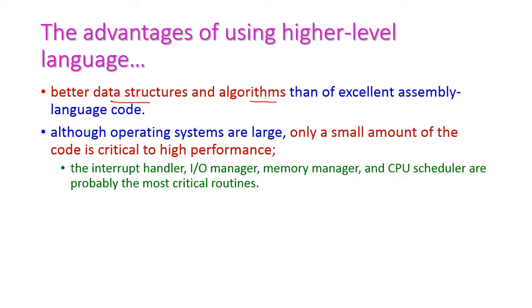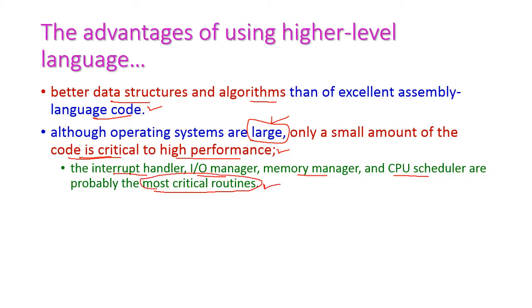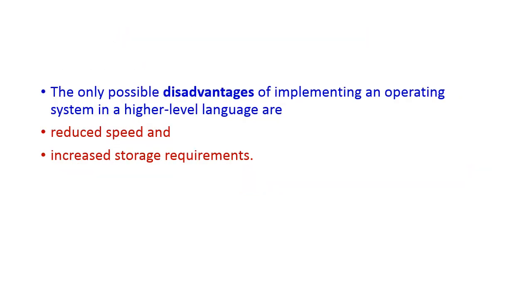High-level languages make development easier compared to assembly language coding. Even when the operating system is very large, only a small amount of code is critical to high performance — specifically the interrupt handler, I/O manager, memory manager, and CPU scheduler are the most critical routines. Even so, high-level languages can handle all those critical routines. The disadvantages of using high-level languages are reduced speed and increased storage requirements.